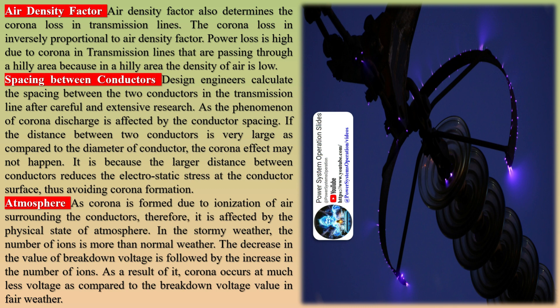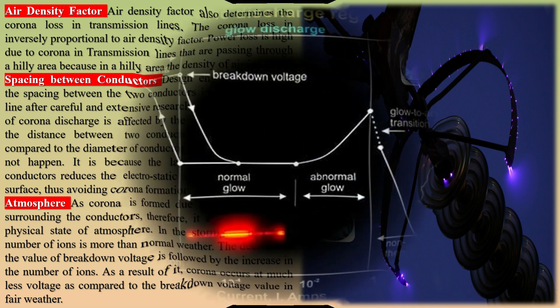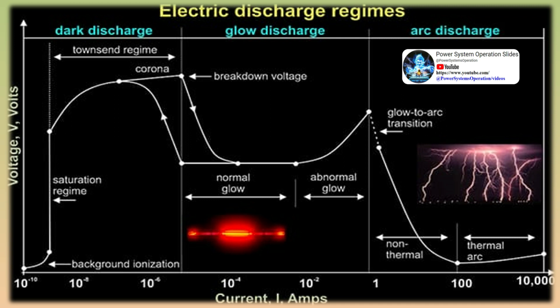Conductor surface: the corona effect depends upon the shape, material, and conditions of the conductors. A rough and irregular surface decreases the value of breakdown voltage due to concentrated electric field at rough spots, giving rise to more corona effect. The roughness of a conductor is usually caused by the deposition of dirt, dust, and scratching. Raindrops, snow, fog, and condensation accumulated on the conductor surface are also sources of surface irregularities that can increase corona. Air density factor also determines the corona loss in transmission lines, and corona loss is inversely proportional to air density factor. Power loss is high due to corona in transmission lines passing through hilly areas because in hilly areas the density of air is low.